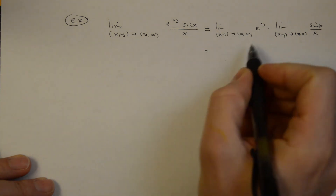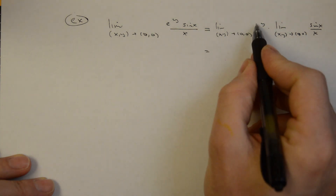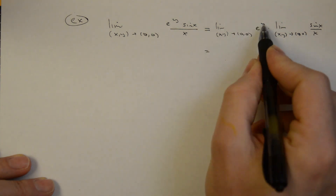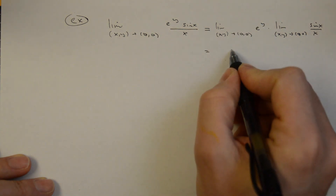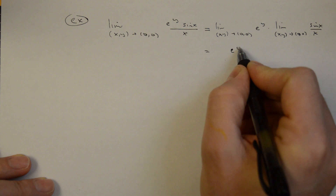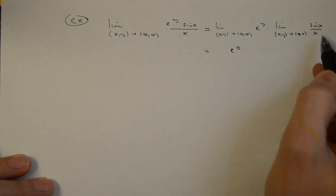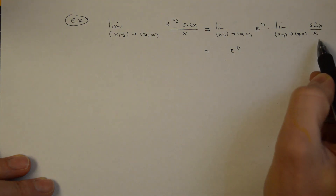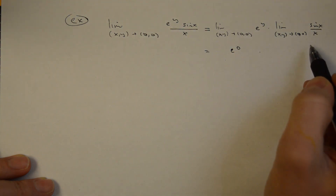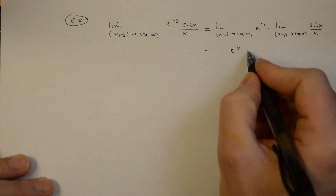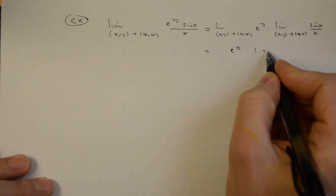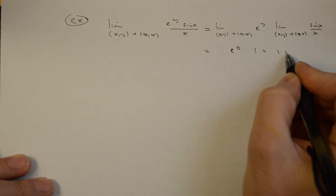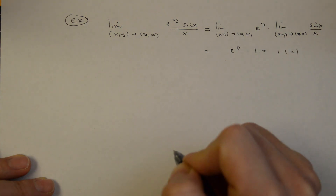The first limit, as y goes to 0, is e^0 which is 1. The second limit, sin(x)/x as x goes to 0, is a standard limit known to be 1. So this becomes 1 times 1, which is 1.